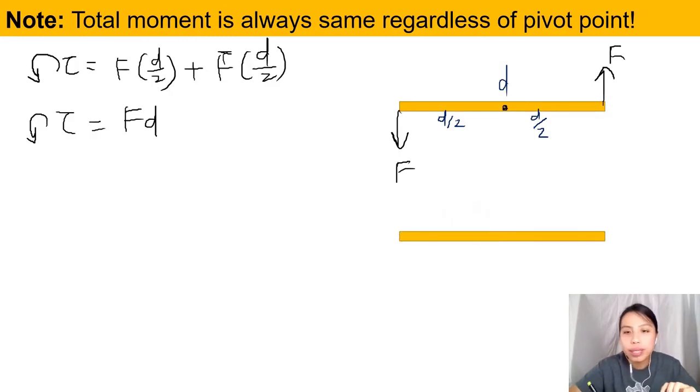What if the pivot point is somewhere else? Let's say, I don't know, somewhere here, off-center a bit. If we look at F down and F up, let's say the whole length is still D, the whole rod length is D, but now let's call this short part X, from here to here, and then the other long part, we call it D minus X. There we go. Right? So X, D minus X, D is the whole length.